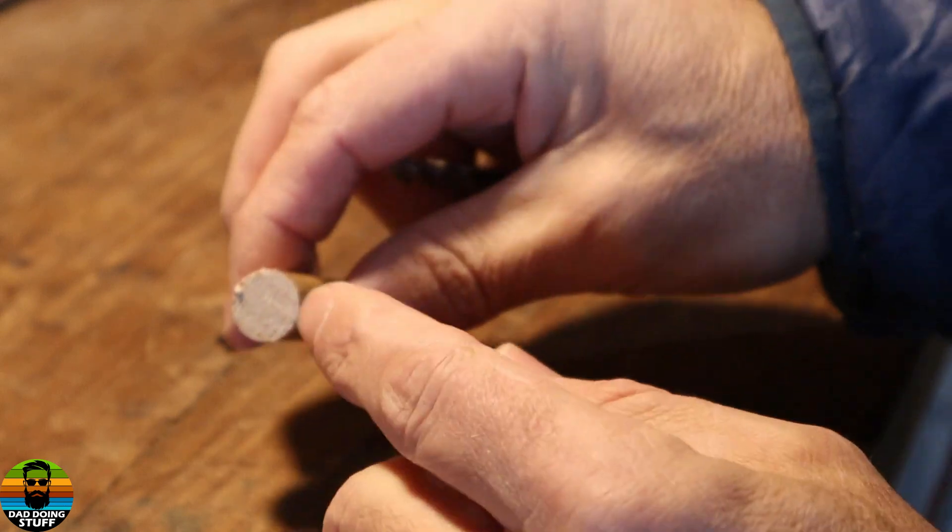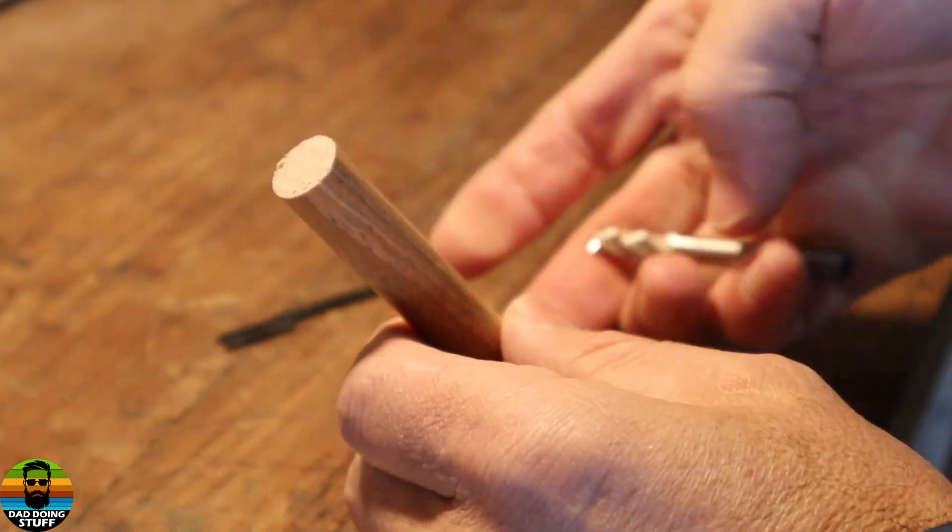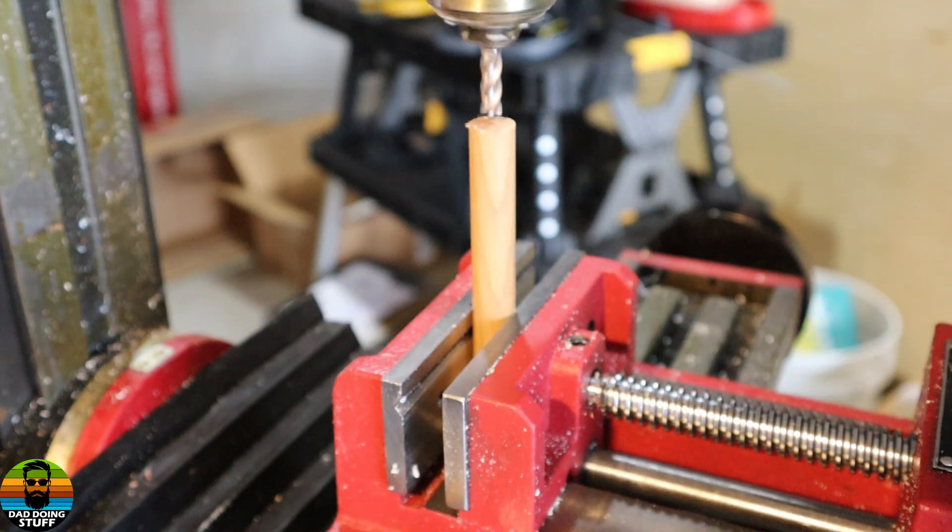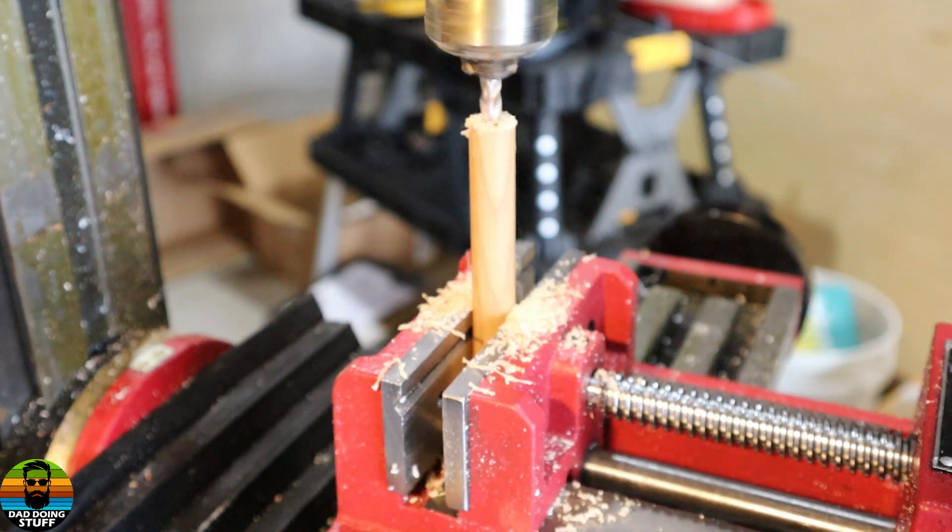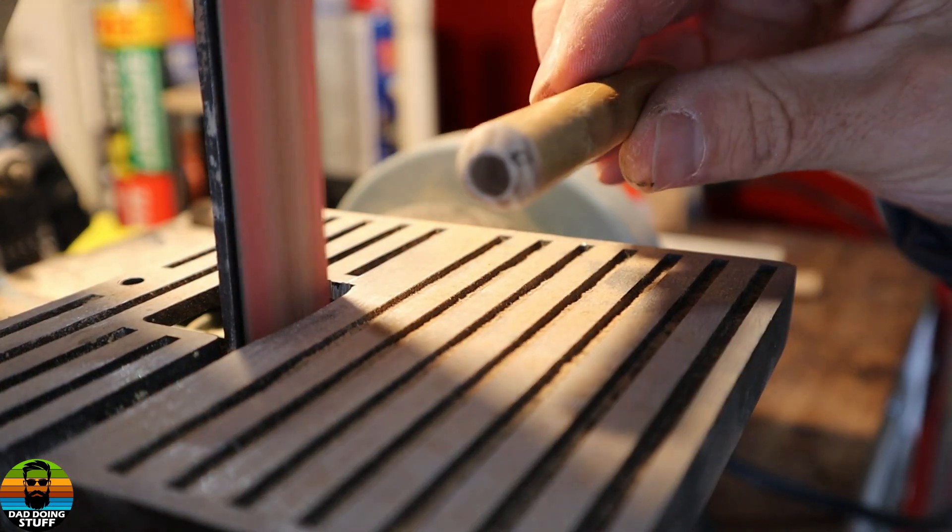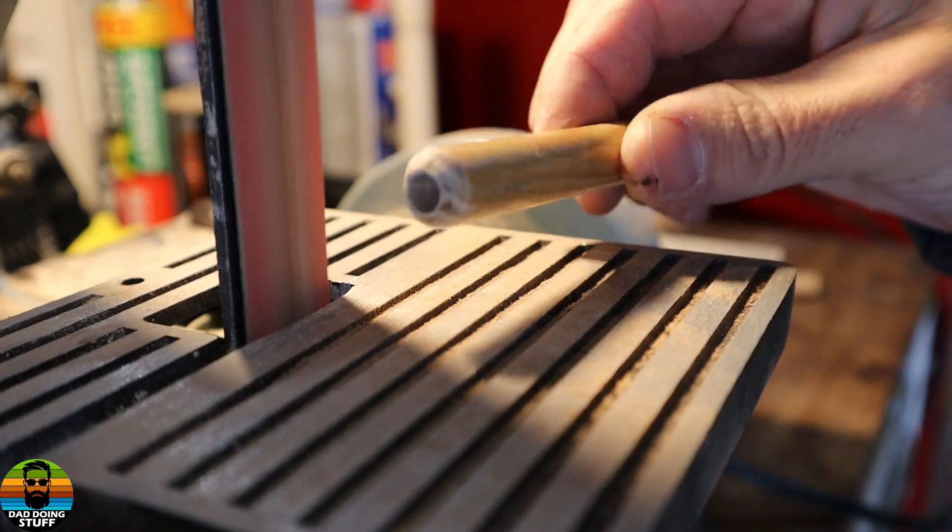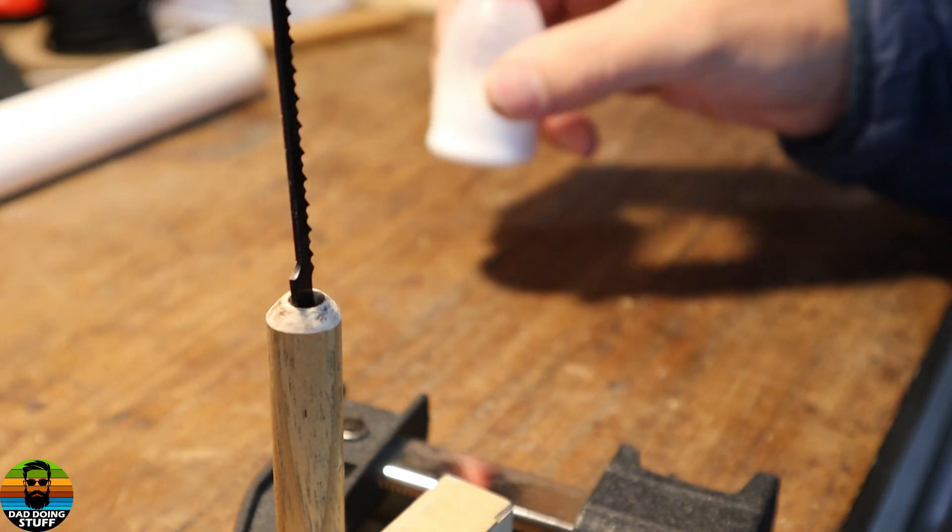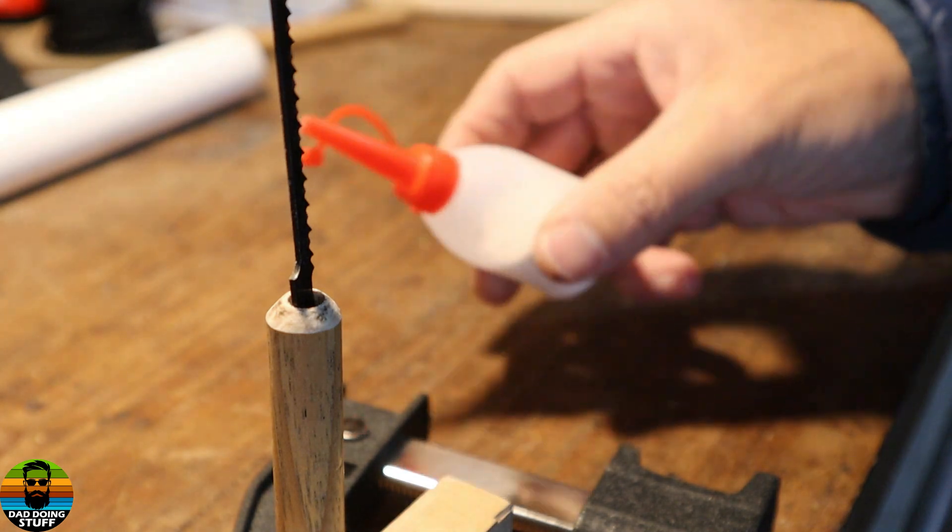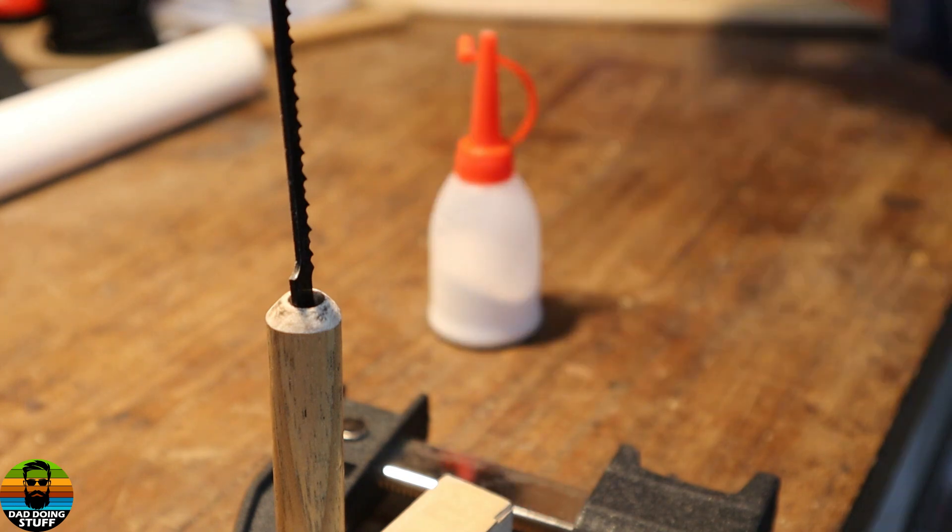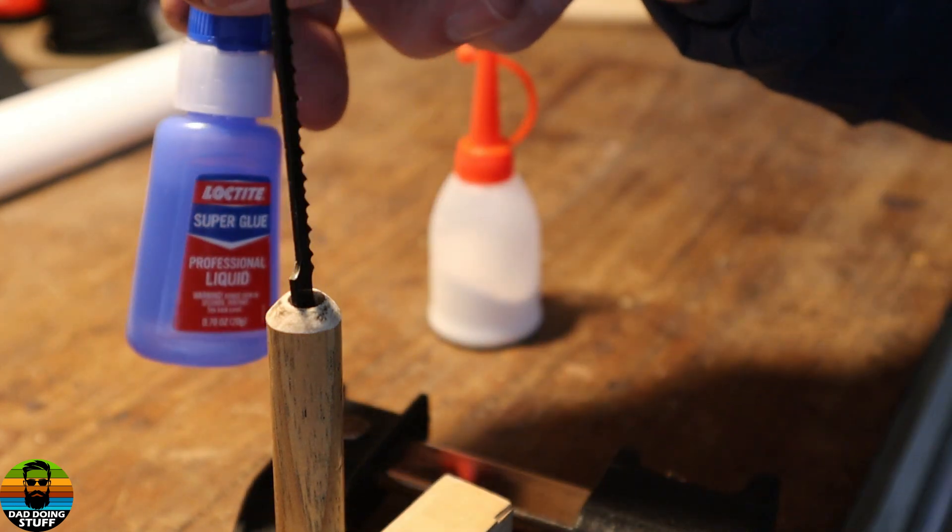The next thing I wanna do is put a hole in the end of this that's about the same diameter as that is wide. But what I'm gonna do is put that in and now I have some baking soda, which I've just put in a little oil bottle and then my liquid super glue.